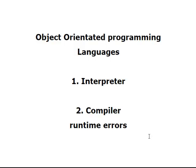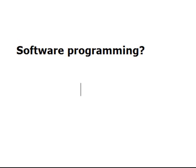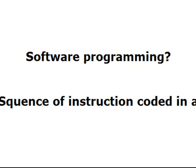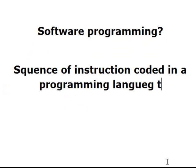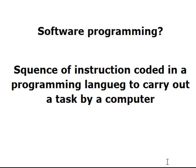More on that in examples — once we hit a runtime error, we're going to talk about it. But for now, I want to know the two different types of object-oriented programming languages. So what is software programming all about? Instructions coded in a programming language to carry out a task by a computer — that's my definition of what software programming is.